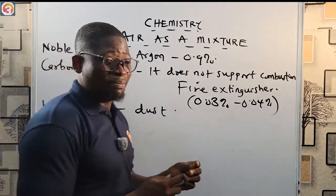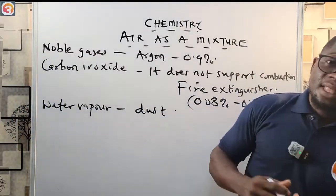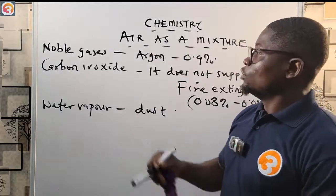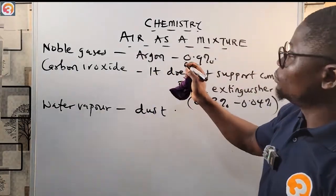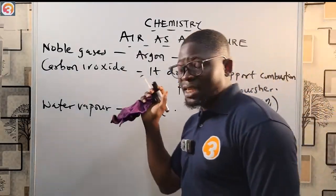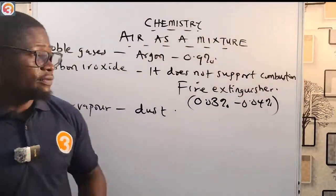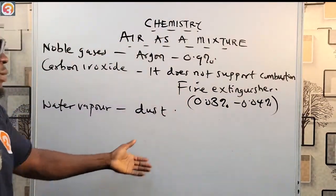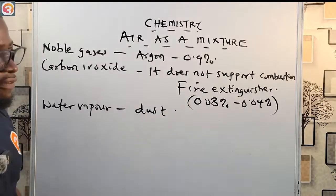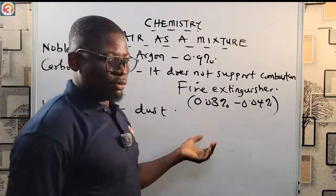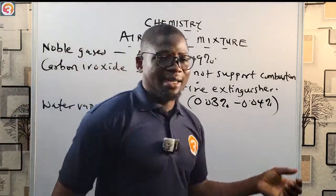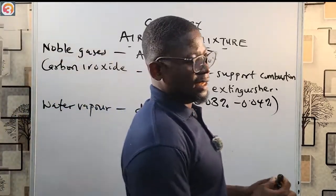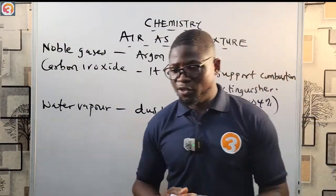To summarize: nitrogen contains 78% of total air composition. Oxygen is 21%. Noble gases — argon is the most abundant at 0.9%. Carbon(IV) oxide has about 0.03%, does not support combustion, and can be used as a fire extinguisher. We also looked at water vapor and other minor particles all present in atmospheric air.